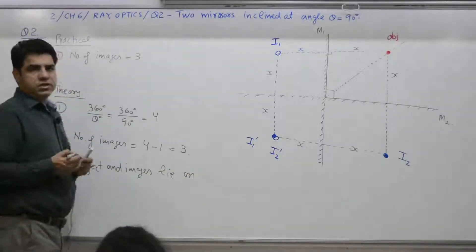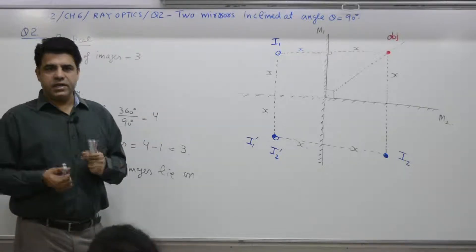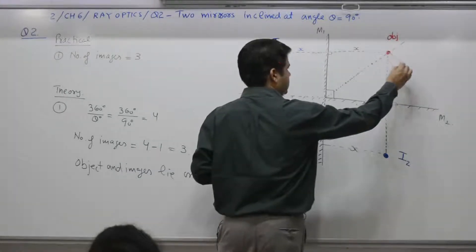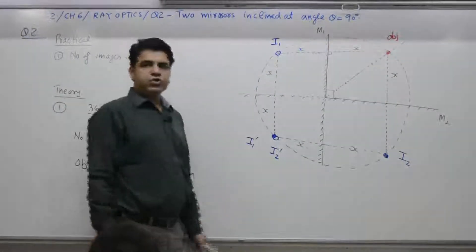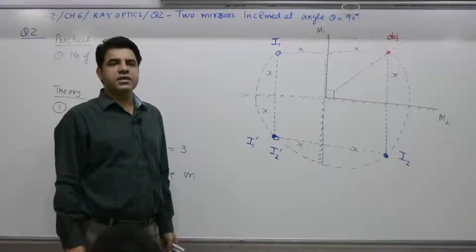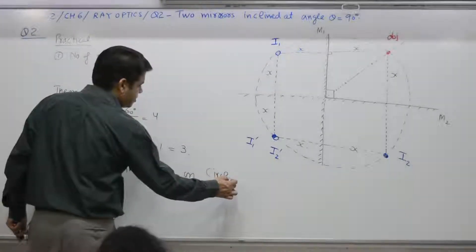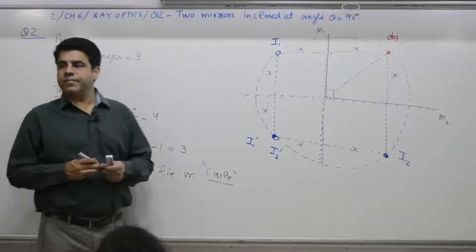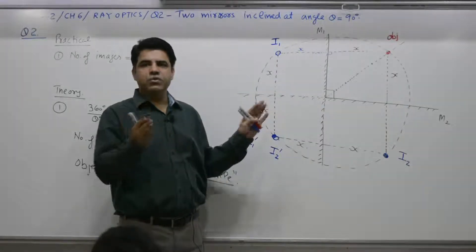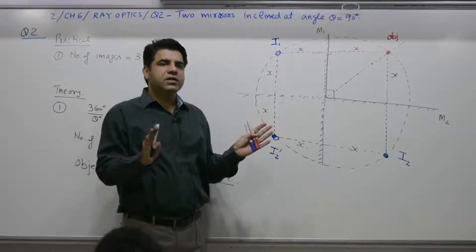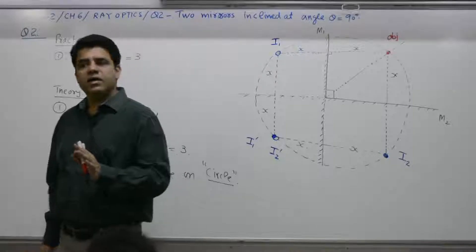The object and all images — do they lie on a square, a circle, or a rectangle? Here it appears to be a square, but the correct answer is they lie on a circle, which we will prove in the next question. In the next question the angle between the two mirrors will be 60 degrees, and when you draw it out for any angle — 60°, 30°, 45° — the object and its images always lie on a circle.